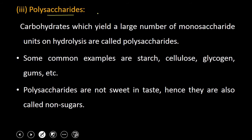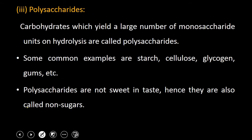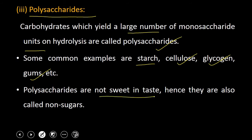The third type is polysaccharides. Polysaccharides are carbohydrates which yield a large number of monosaccharide units on hydrolysis. Some common examples are starch, cellulose, glycogen, and gums. These polysaccharides are not sweet in taste; hence they are called non-sugars. Children, this point you have to remember — as they are non-sweet, they are called non-sugars.